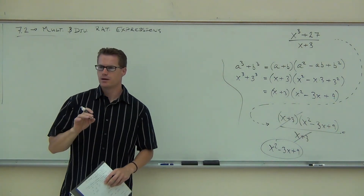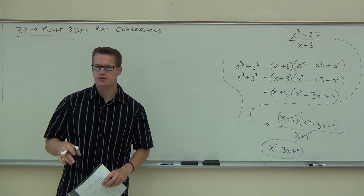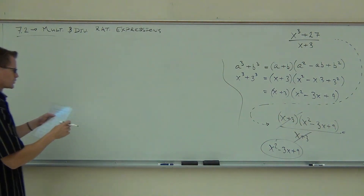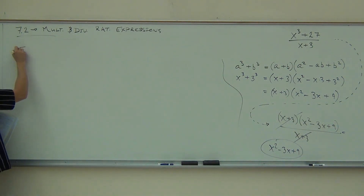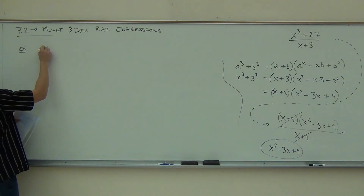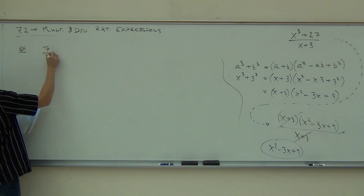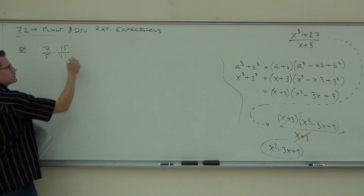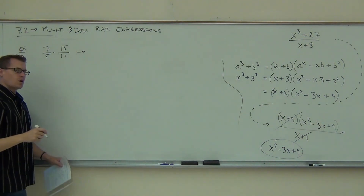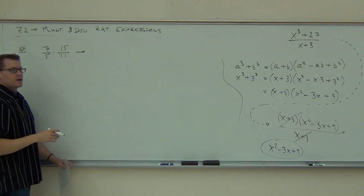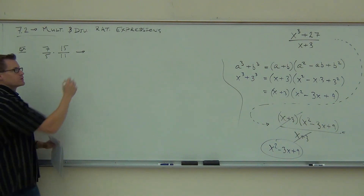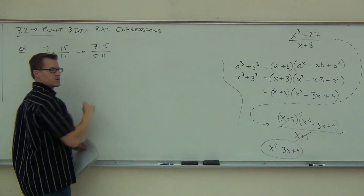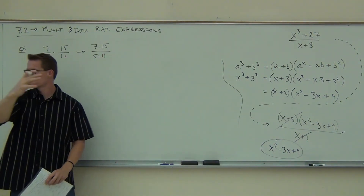This is very much like working with fractions. With fractions, you really have two options for multiplying. If I give you some regular fractions, you could go and multiply the numerators — like 7 times 15 over 5 times 11 — because when we multiply fractions, we just go straight across.